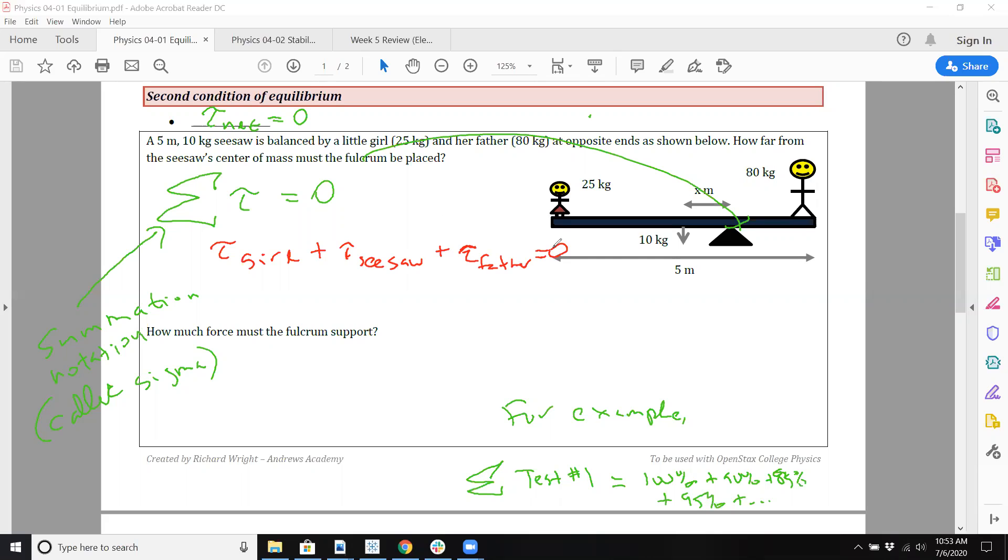Why am I looking at the seesaw? Because the seesaw, the center of mass of the seesaw is right there. So there's two things that are a certain distance away from the fulcrum. Well, I don't know, there's a lot of different things we could assume here.